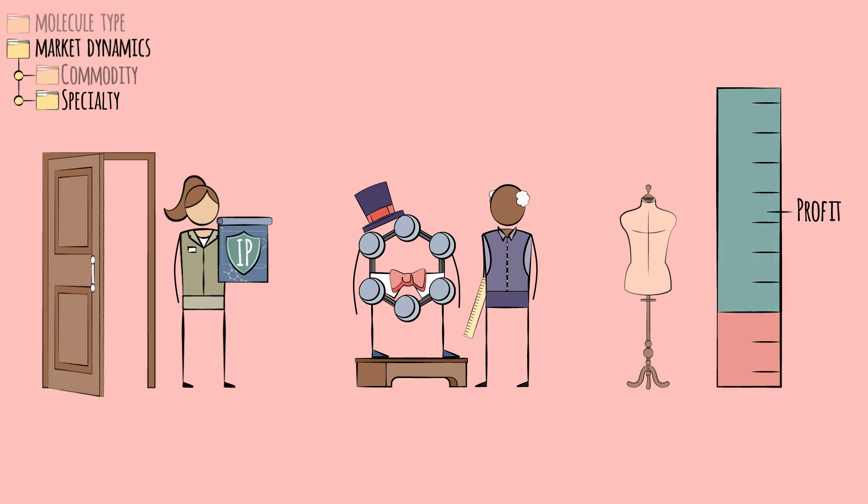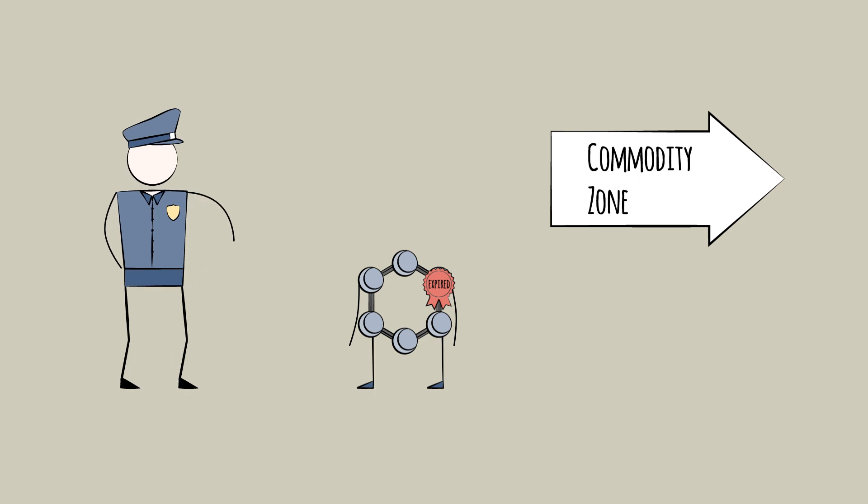These are much smaller markets than the commodities markets, so scale is less relevant. Often, when patents expire or regulations change, products that started as specialties can become commoditized over time. This is like what happens when brand-name medications become generic.